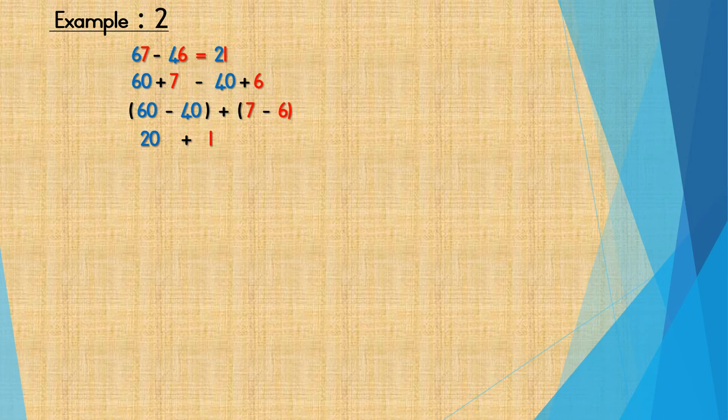Step 3: Minus the tens and then minus the units. In your tens group you have 60 minus 40, so 60 minus 40 is equal to 20. In your unit group you have 7 minus 6, so 7 minus 6 is equal to 1. So step 3 will read 20 plus 1.